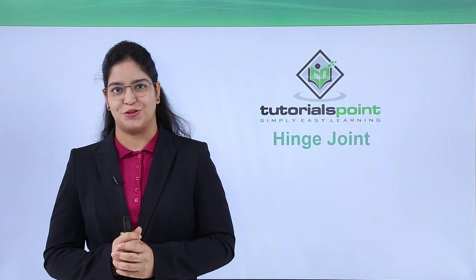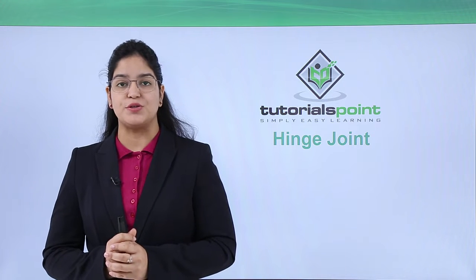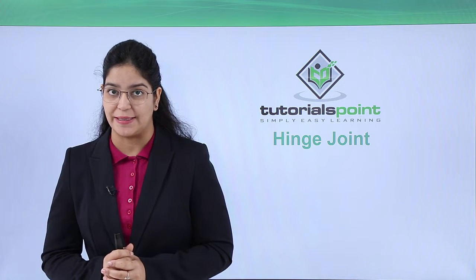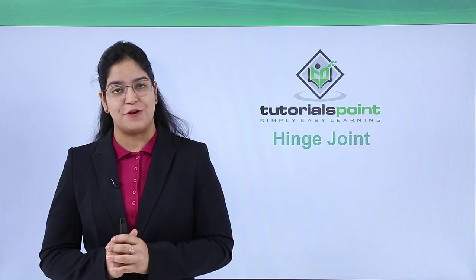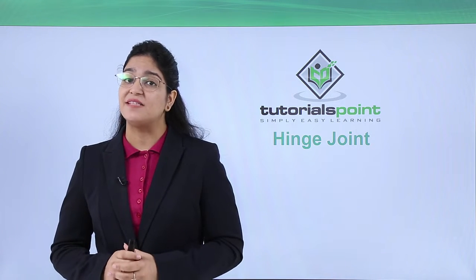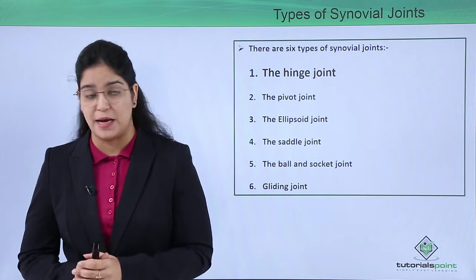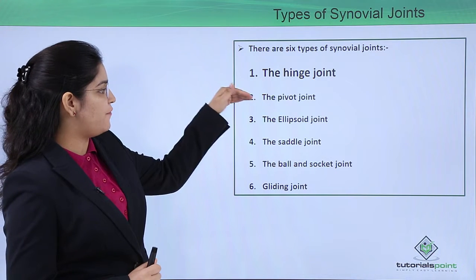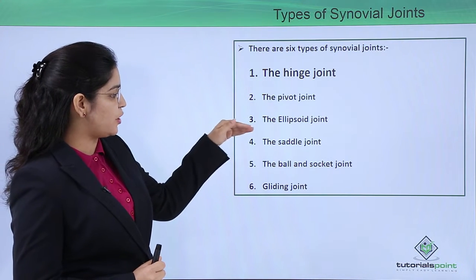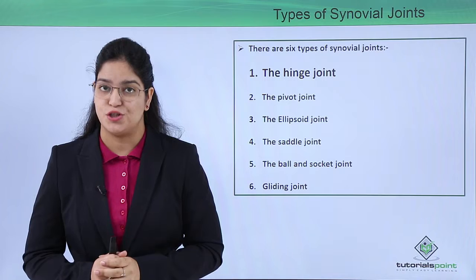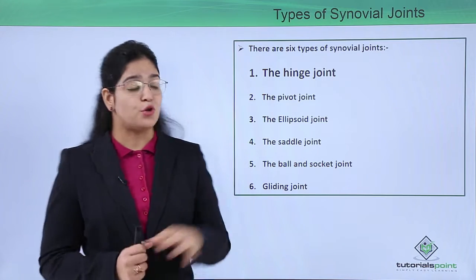Hi there, welcome back to Tutorials Point. Today we are going to learn about the hinge joint, a part of a synovial joint. We know we have six types of synovial joints in our body: the hinge joint, pivot joint, ellipsoid joint, saddle joint, ball and socket, and the gliding joint. We are going to learn about all these joints, but one by one.